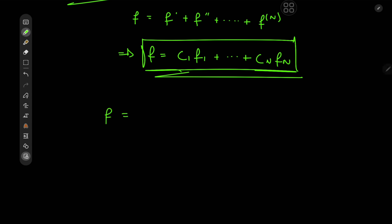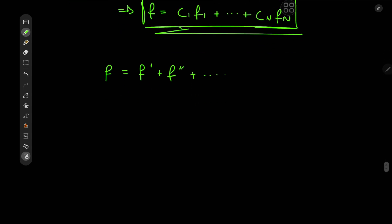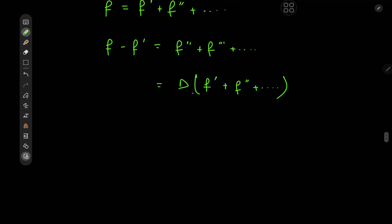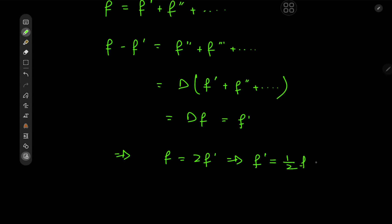Let's return to the infinite order differential equation: f equals f prime plus f double prime plus so on. What if I were to take f prime onto the other side? So I have f minus f prime equals f double prime plus f triple prime plus so on, which is the derivative with respect to x of (f prime plus f double prime + ...) — and that is exactly what f is defined to be. So this equals d·f which is f prime, implying f minus 2f prime equals zero, or f prime equals 1/2 of f, giving us exactly the same solution: c times e to the x/2.